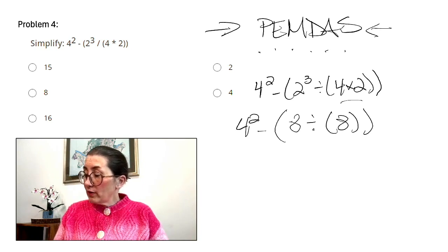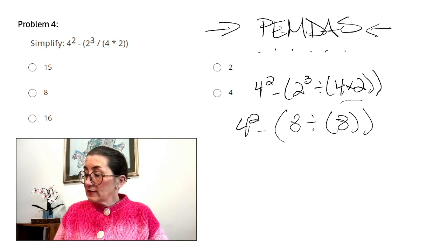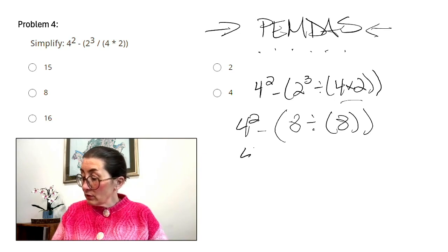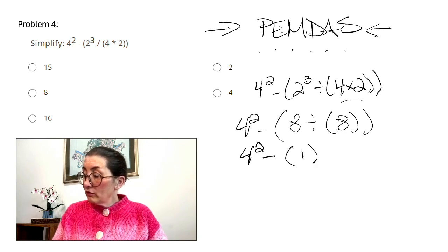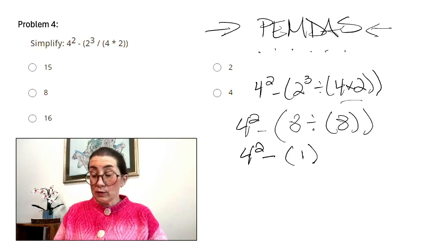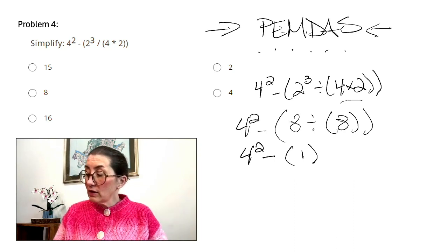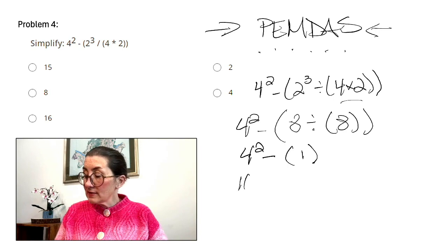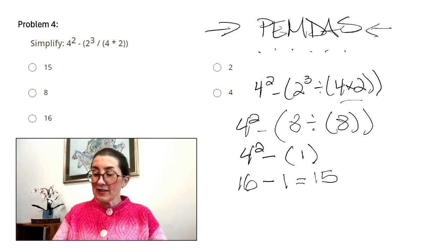So we've got 4 squared and we've got 8 divided by 8 in parentheses. So we're still going to work there. 8 divided by 8 is 1. Now we go to exponents 4 squared. 4 times 4 is 16 minus 1 is equal to 15. And there's our answer.